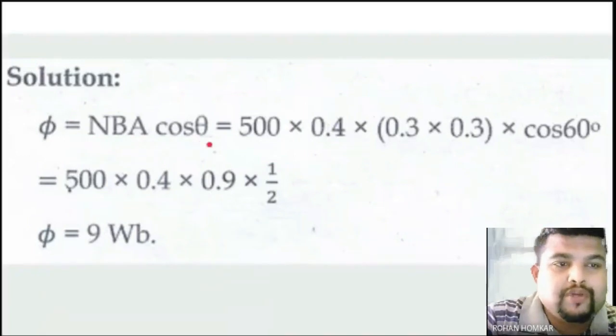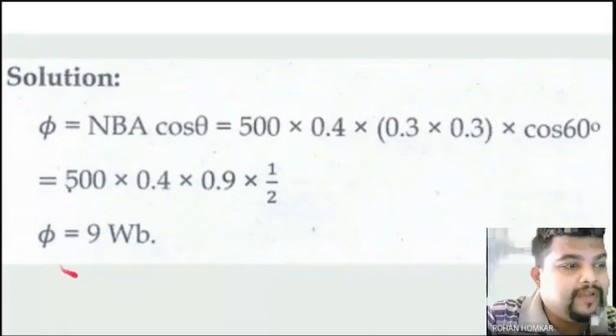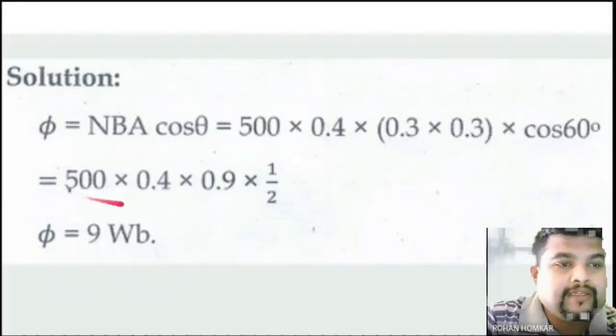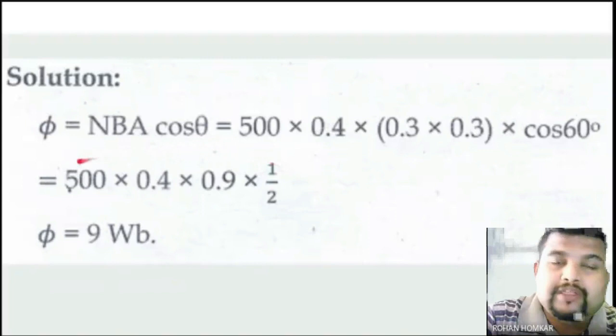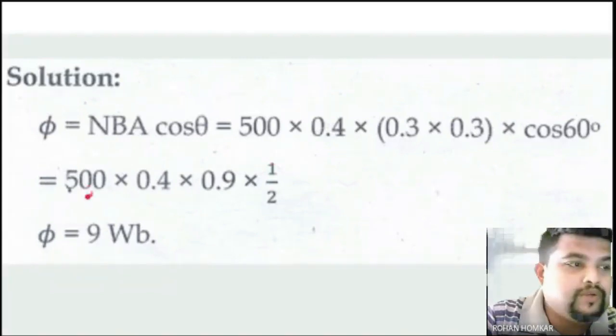So putting the values in this formula, we are getting the value for the magnetic flux, and magnetic flux unit is Weber. So without any mistake, if you do this calculation, this formula and this particular putting the values in the formula and the calculation, then you will be getting a correct answer.